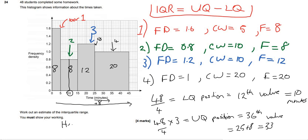Hence, the IQR equals 33 take away 10, which is 23. Okay, fantastic. I hope you've enjoyed this video on histograms. Any more requests, do let me know. Thanks very much.